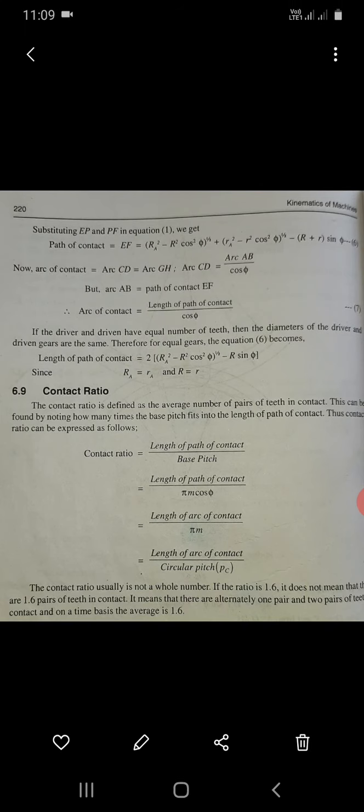Contact ratio is length of path of contact divided by base pitch, or length of arc of contact divided by circular pitch. It is defined as the average number of pairs of teeth in contact.